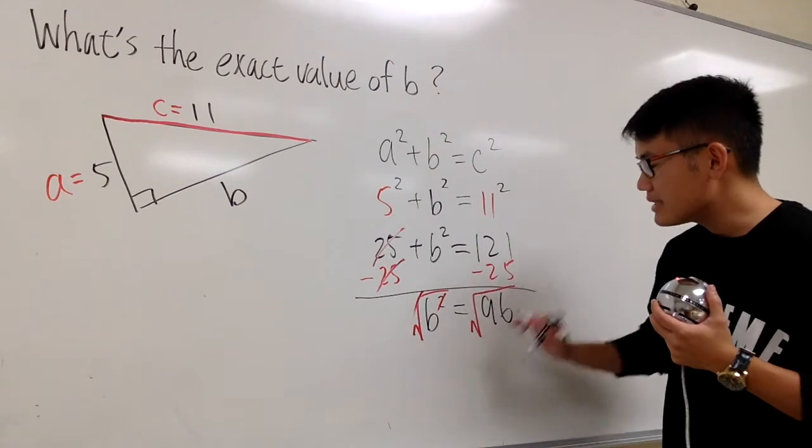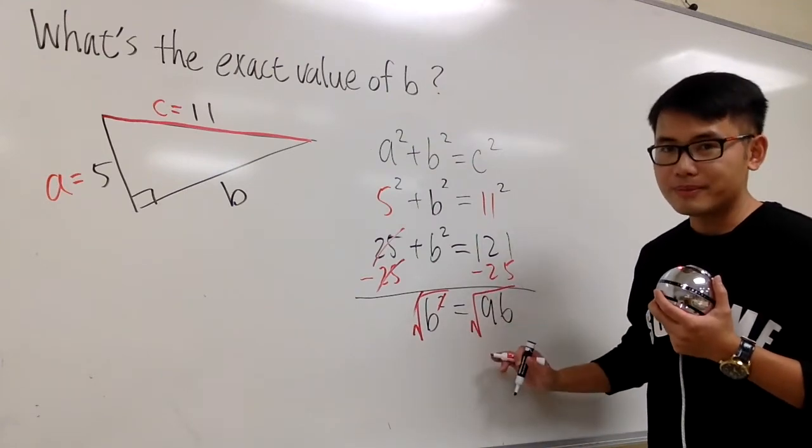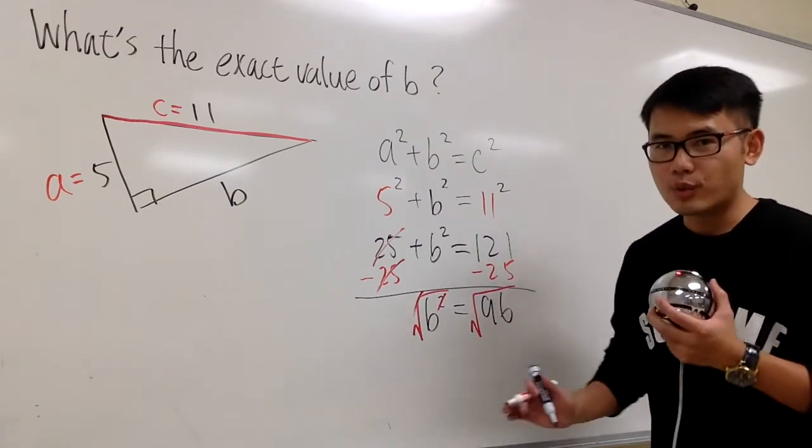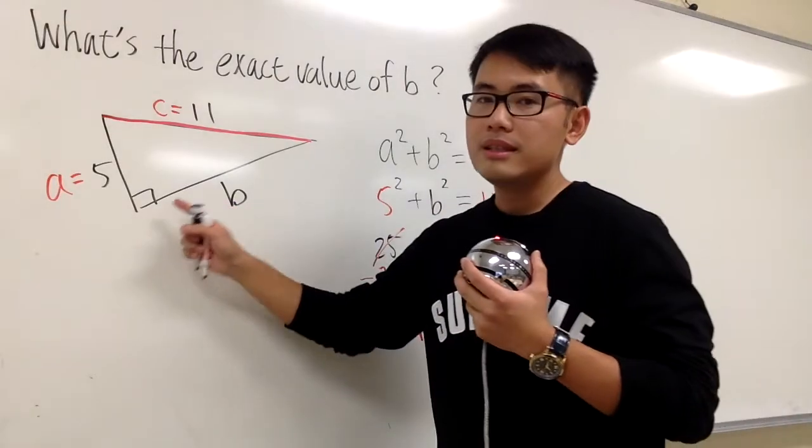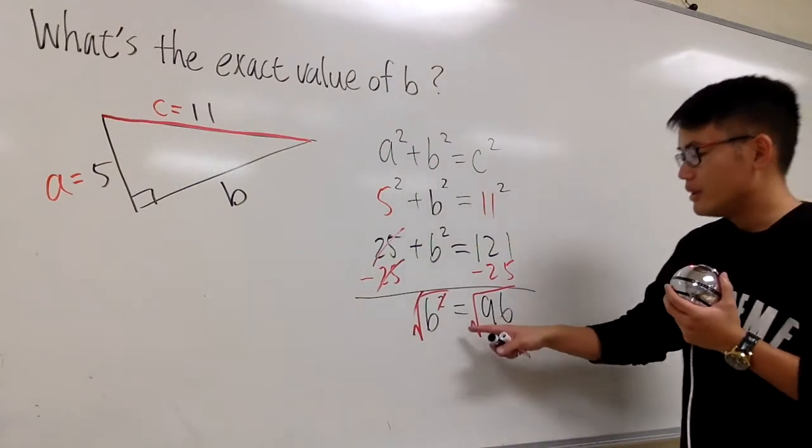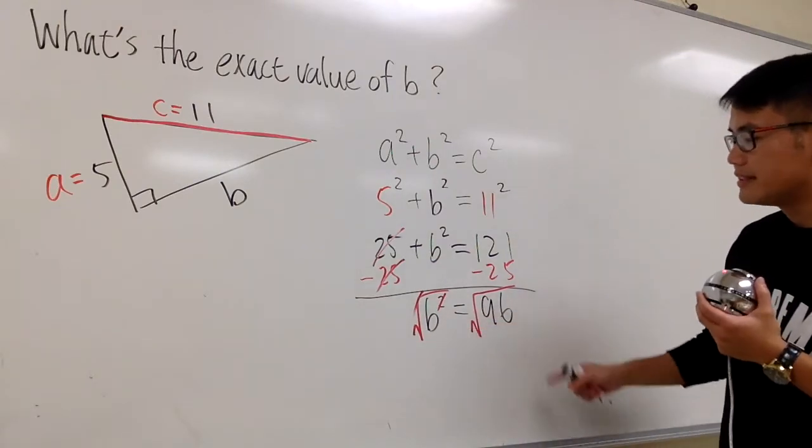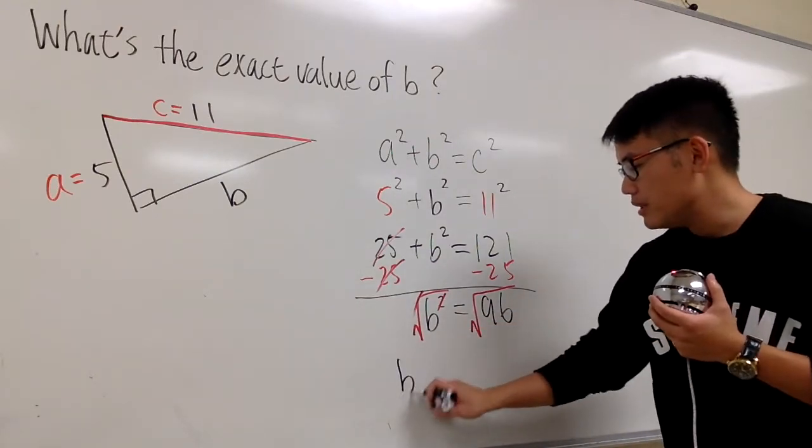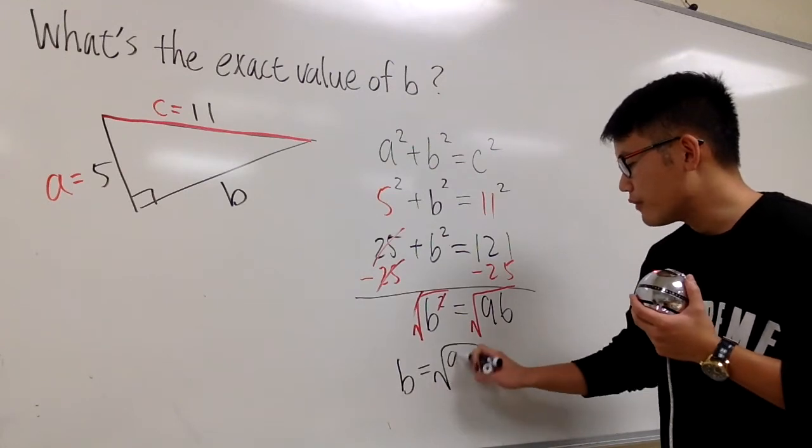I'm just going to take the positive square root right here, just the positive square root, because this is the side of a triangle, we cannot have negative value. So positive square root of 96, and you can see b is equal to √96.